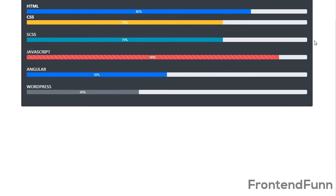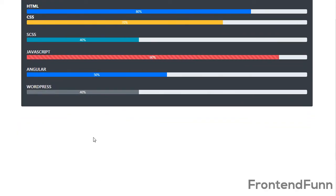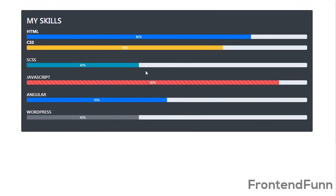You can customize the percentage just by changing the data-progress value directly in the HTML. For example, I changed it to 40%, and right now you can see the bar is at 40% width.